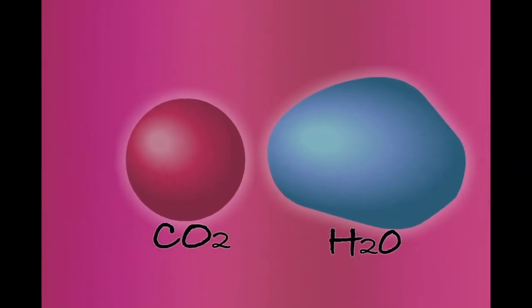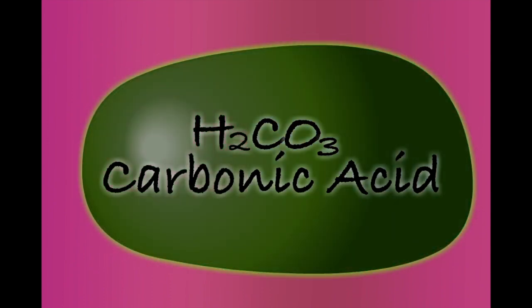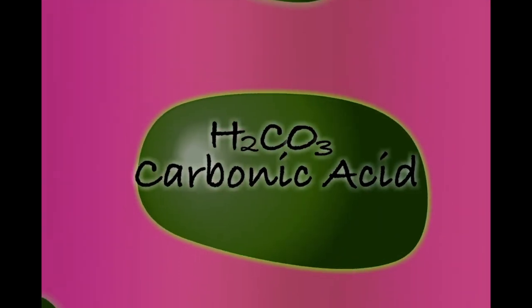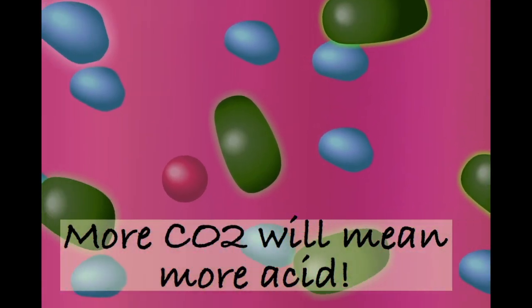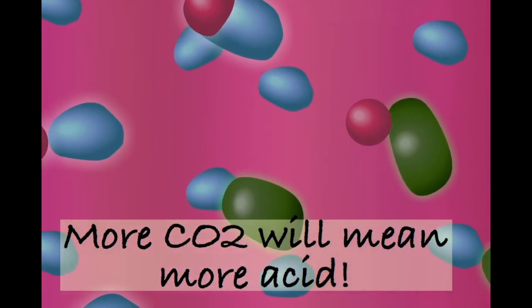When CO2 combines with water, the chemical carbonic acid is produced. If too much carbonic acid is allowed to accumulate, it will begin to affect the pH of the blood. The more CO2 present in the blood, the more carbonic acid that will be produced.